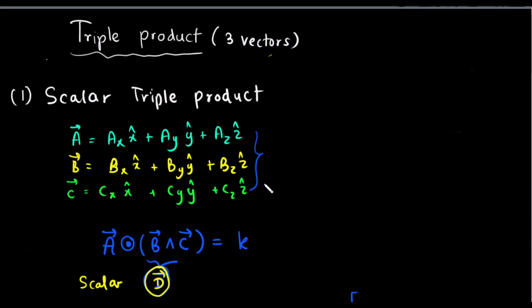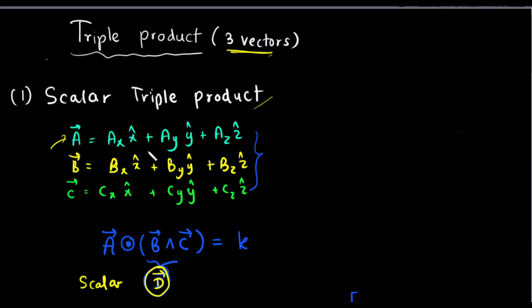In this video, I'm going to talk about a triple product of three vectors. Triple product means we are dealing with three vectors. First of all, I'm going to start with the scalar triple product. For the scalar triple product, we are considering three vectors. I'm going to take a vector as my first vector.